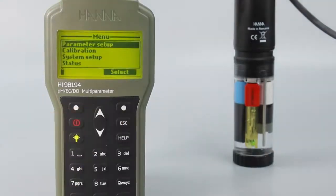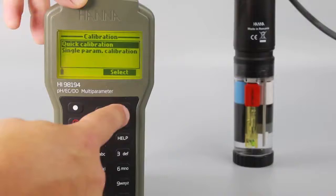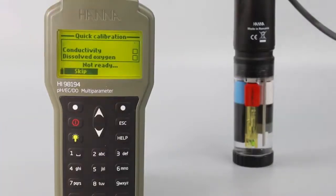From the meter, press menu and then calibration. From there, press quick calibration and follow the prompts.